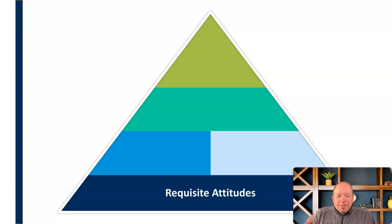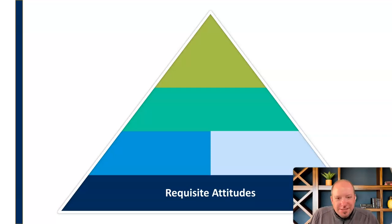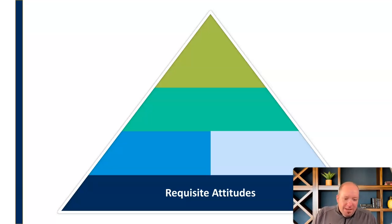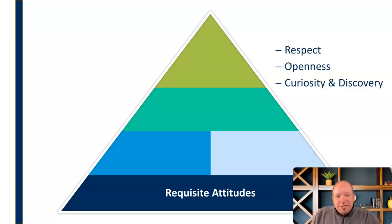The model starts at the very bottom with the requisite attitudes. My grandpa used to say you need an attitude adjustment — and this isn't what he meant by that — but you've got to have the right attitude for intercultural competence. To develop intercultural competence, you have to have the right mindset, the right attitude. More specifically, you've got to have an attitude of respect, of openness, and of curiosity and discovery. These are all critical elements to intercultural competence.